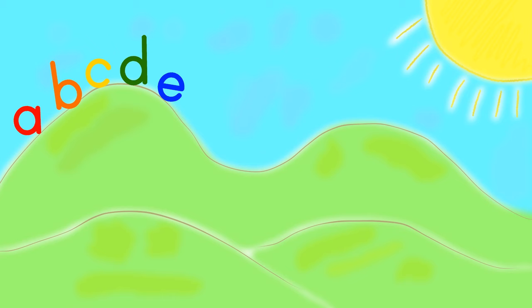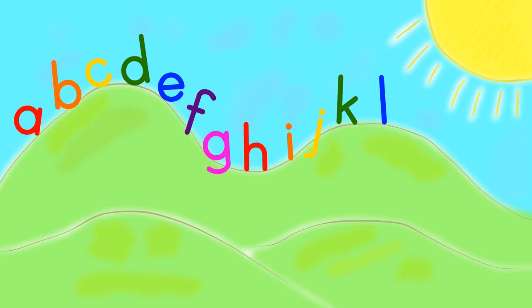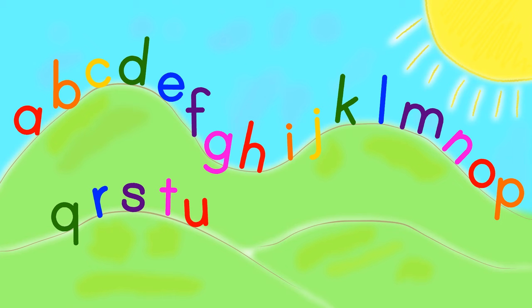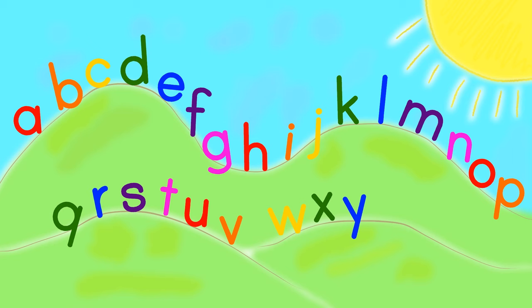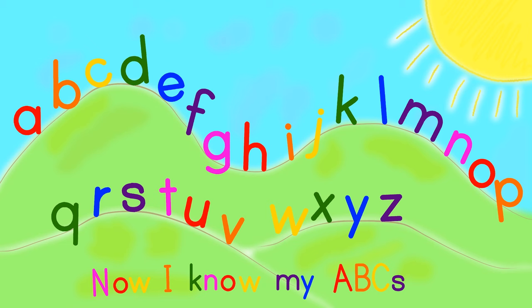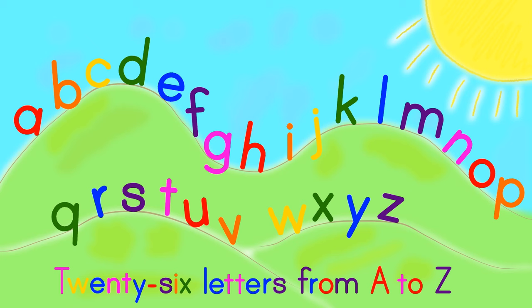A, B, C, D, E, F, G, H, I, J, K, L, M, N, O, P, Q, R, S, T, U, V, W, X, Y, and Z. Now I know my A, B, C, 26 letters from A to Z.